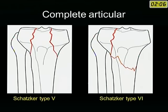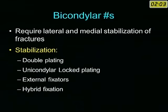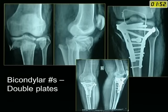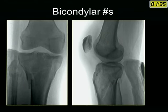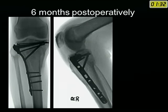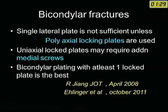Bicondylar fractures — Schatzker types 5 and 6 — require bicondylar stabilization. Options include double plating, a single locked plate, external fixator, or hybrid fixation. A standard bicondylar fracture can be managed with standard bicolumnar fixation. Alternatively, a single locked plate on the lateral side may be sufficient if the medial plateau is not displaced, but only if you have a polyaxial locking plate that can catch the medial plateau with multi-directional screws.